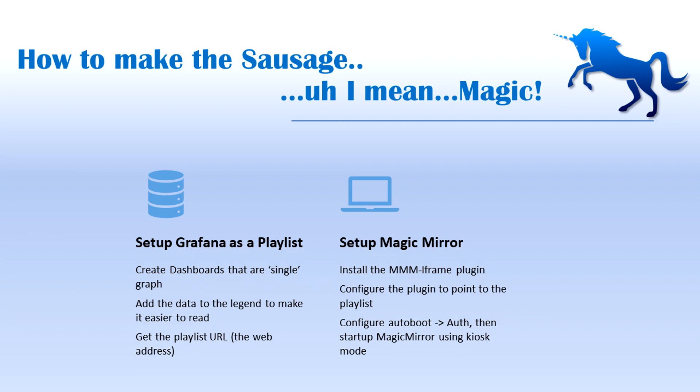Now there are going to be two main parts of this: the Home Assistant and Grafana side, and then the Magic Mirror side. If you haven't watched my last two videos about Grafana, please go back and watch those, because that's where I show you how to set up InfluxDB and set up Grafana. In the second tutorial, I talk about how to build a system dashboard — how to get CPU usage and speedtest.net data in. From here, I'll assume you have those dashboards built and are comfortable with Grafana. We're going to talk about how to get them into a playlist, and then how to get that into Magic Mirror.